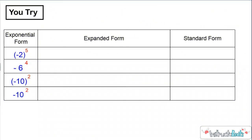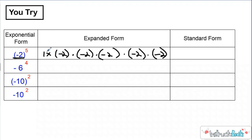So that's something you have to practice, which takes us to our U-try. You're going to pause the video, write these exponential forms out in expanded form and then in standard form, and then push play to check your work. All right, so hopefully you just tried it. Here I see parentheses around my negative two, which means negative two is my base and I'm going to have five copies of that. I start with a one and multiply by five copies of negative two. Because my exponent is odd, my answer's going to be negative in standard form — and when I solve that out, you should have gotten negative 32.